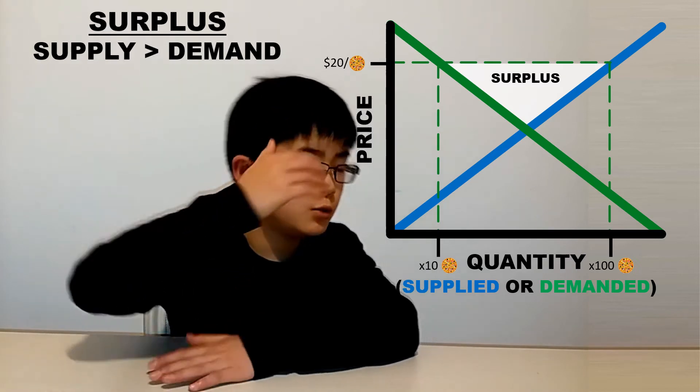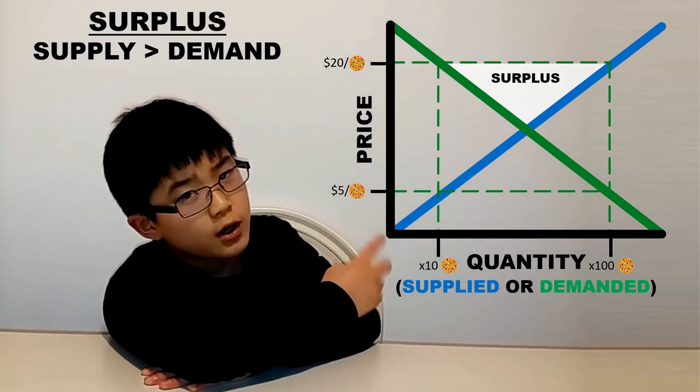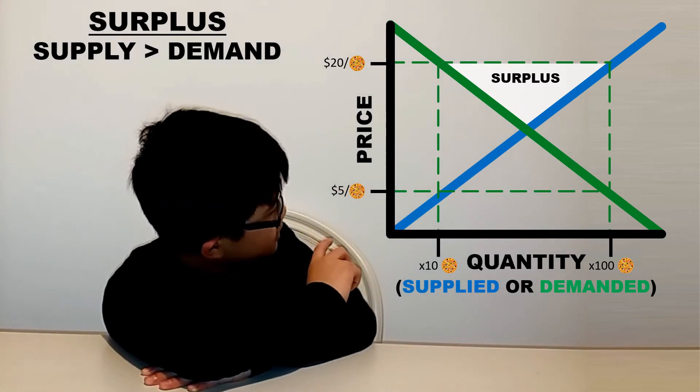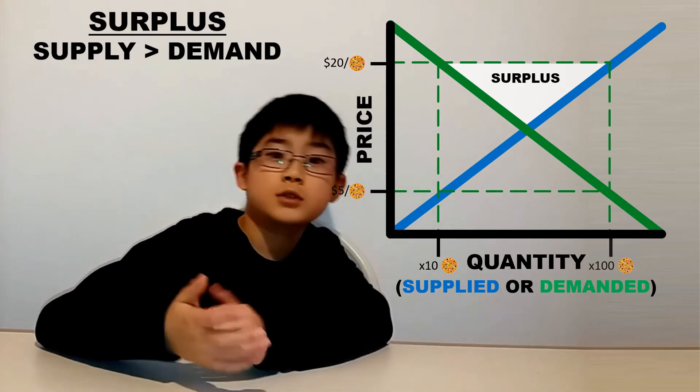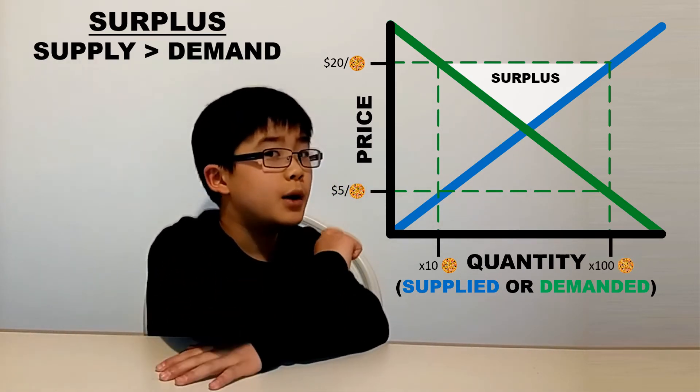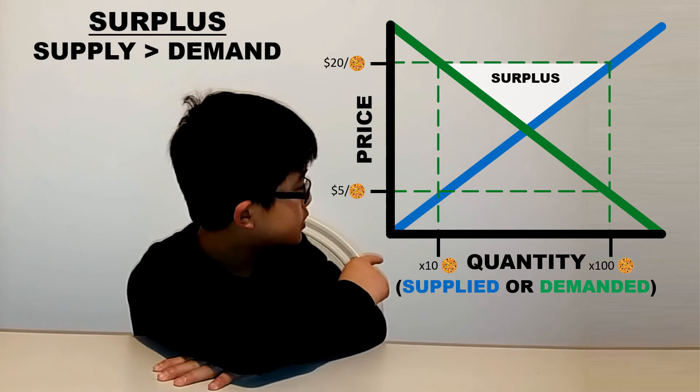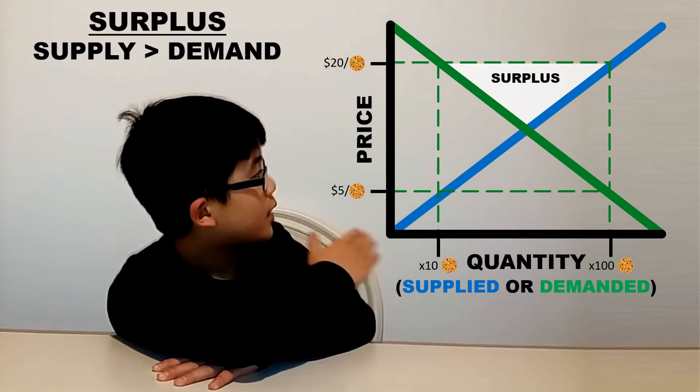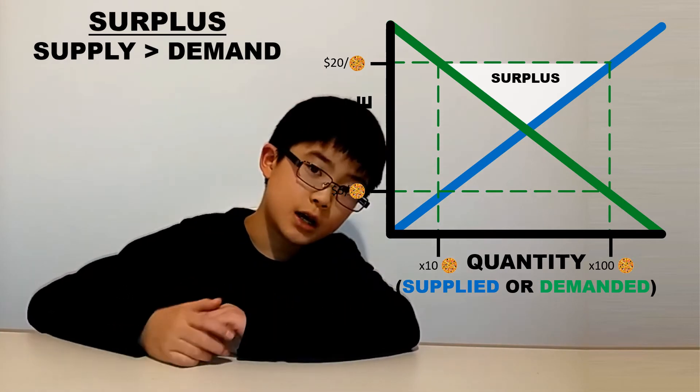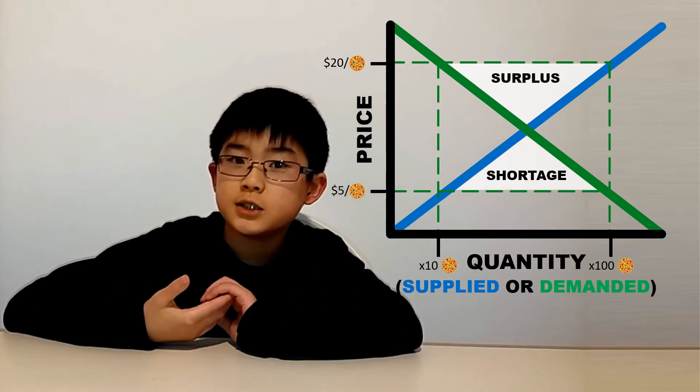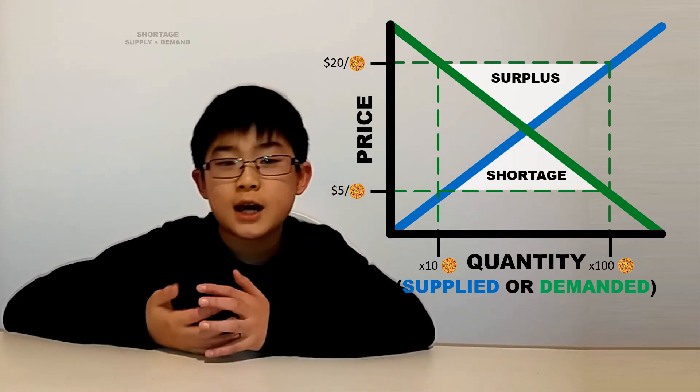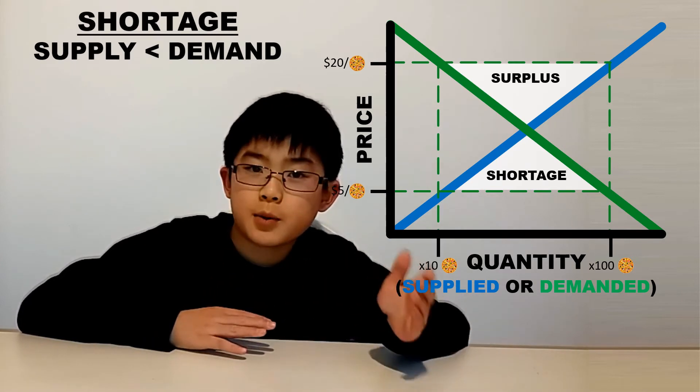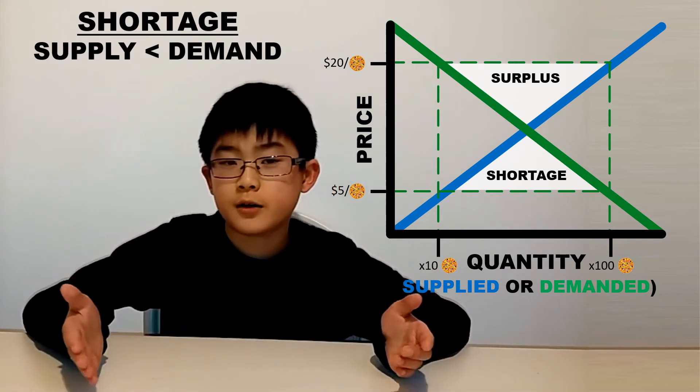Let's say we lower it to $5. Now if we look at this graph, it shows us that consumers want to buy a whole lot because it's so cheap, but the producers don't want to produce that much at that price. This area is instead not a surplus but is called a shortage. It's where there's not enough supply to outpace the demand for the product.